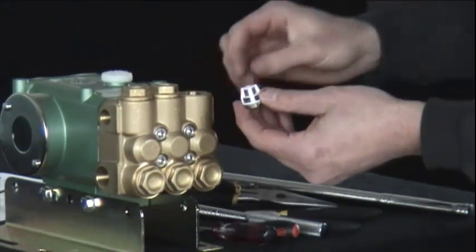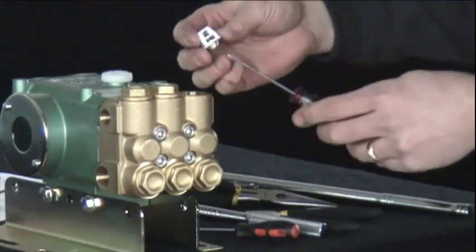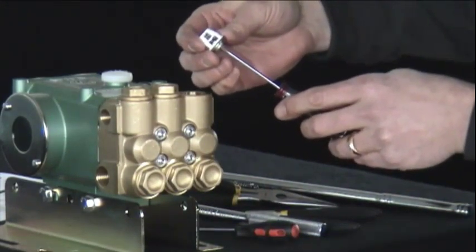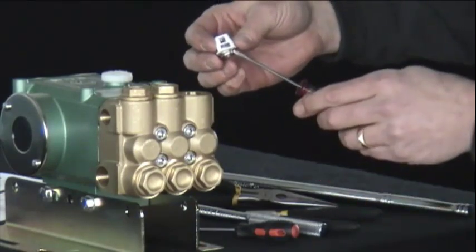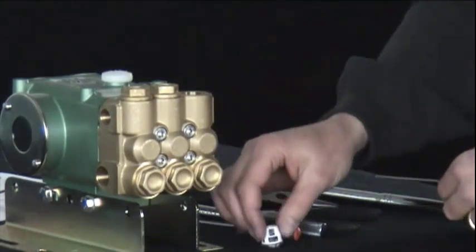Here we see the valve assembly with the retainer. On the inside is a spring. Then we have the valve disc, and at the bottom, our valve seat.